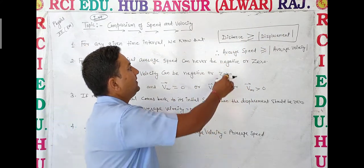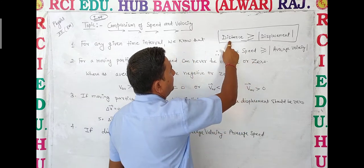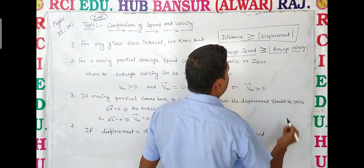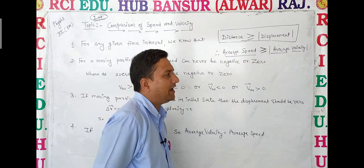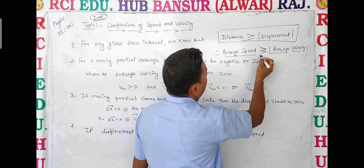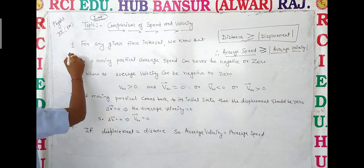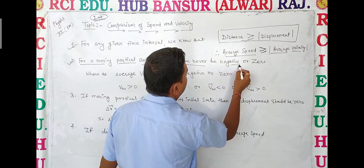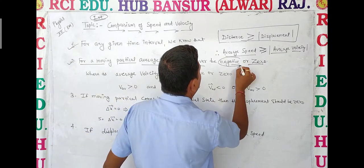In this condition, average speed is greater than average velocity. For a moving particle, average speed can never be negative or zero. Any moving particle's average speed will never be negative or zero.